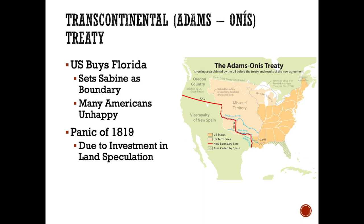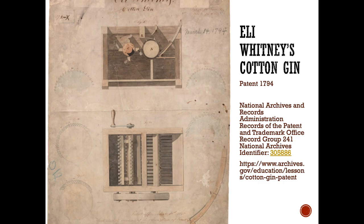In 1819 there was also the first United States economic panic — a depression — due to land speculation as a result of the Louisiana Purchase. A lot of people went bankrupt, a lot of banks went bankrupt, and it had serious repercussions for the United States economy. A few years before that, there was the development of the cotton gin in 1794. Although very simple, it was a way of cleaning cotton, which was important because cotton grown in the southern Gulf area was not easily cleaned. The cotton gin made that type of cotton much more profitable.